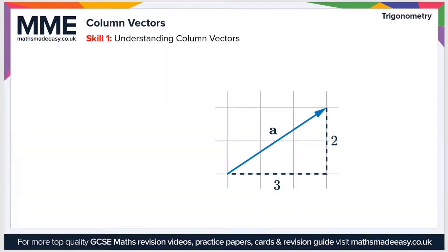Welcome to the Maths Made Easy tutorial on column vectors. So first of all, what's a vector? Well, a vector is a quantity that has both a magnitude — so a magnitude is a size — and a direction. So on a diagram, we would express this as an arrow, so the arrow tells us what direction, and the length of the arrow tells us the size.